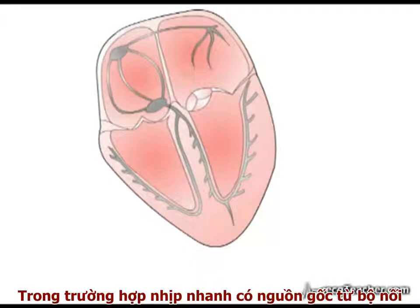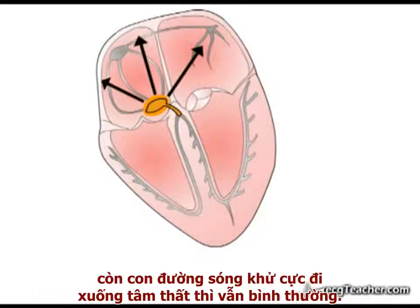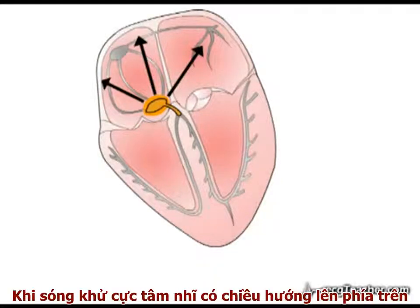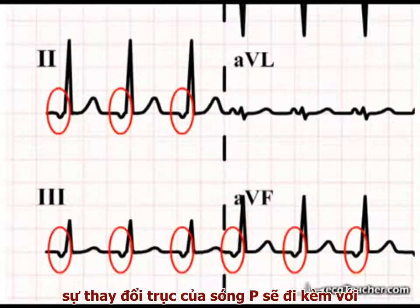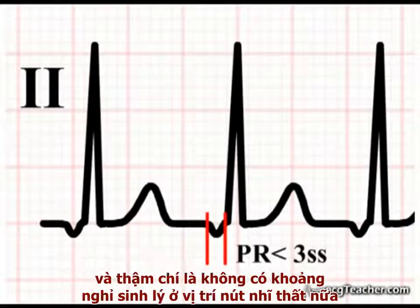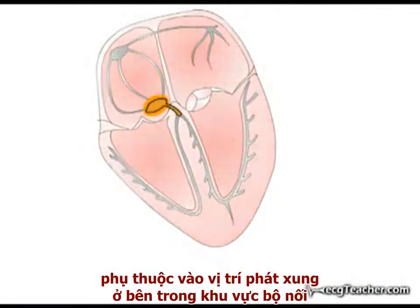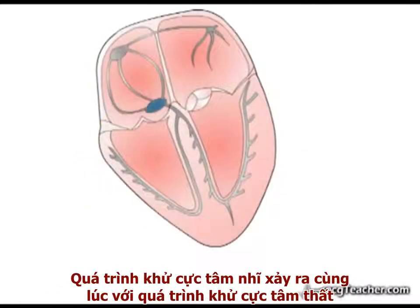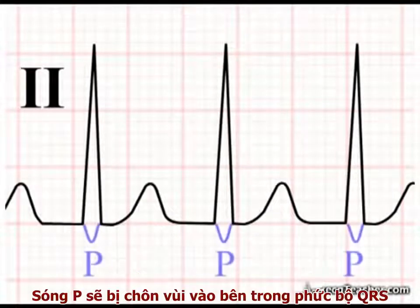When a supraventricular tachycardia arises from a focus within the junctional region, depolarisation will proceed upwards into the atria, and ventricular activation will travel as normal downwards into the conducting system. As atrial depolarisation spreads superiorly, the P waves in the inferior leads are negative. In addition, this altered P wave axis is accompanied by an abnormally short PR interval, as the discharge has little if any distance to traverse before reaching the AV node, and may actually bypass the normal physiological delay within the node. Depending on the site of origin within the junctional region, in some cases of junctional tachycardia, atrial depolarisation may be coincident with ventricular depolarisation. In such cases, the P wave is not visible as a separate entity on the ECG, being buried in the QRS complex.